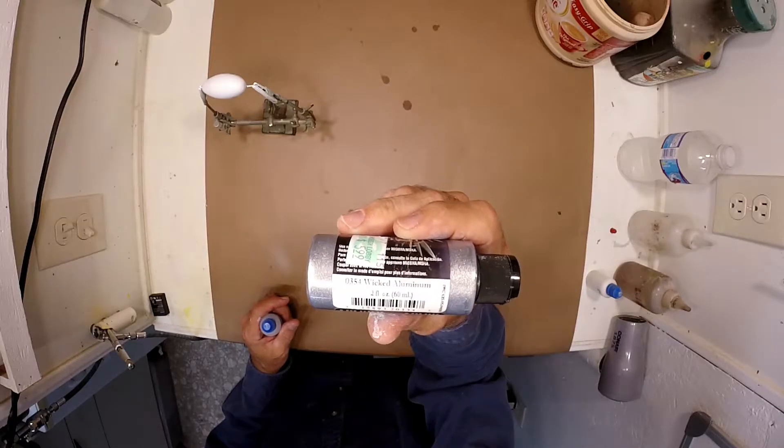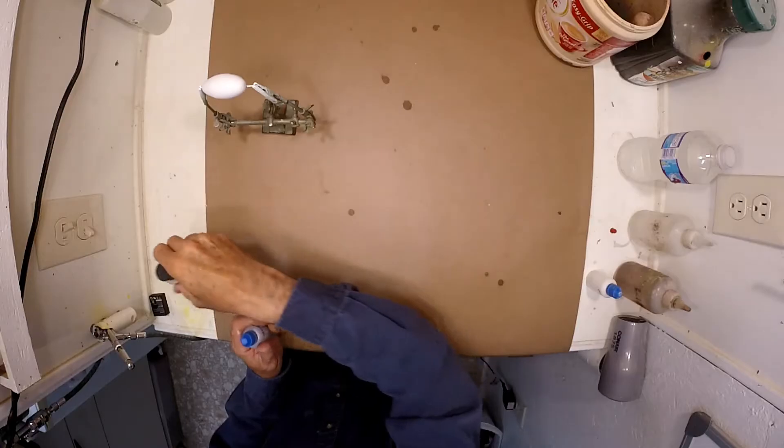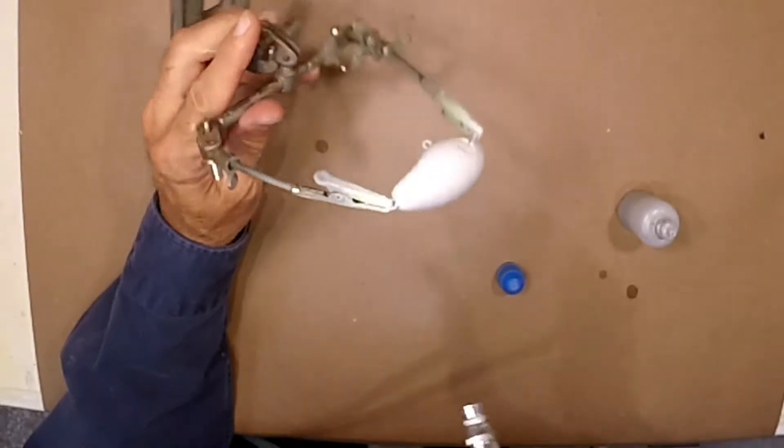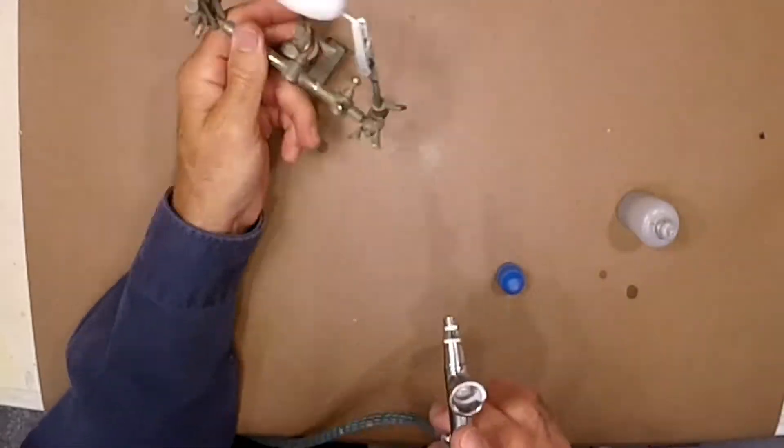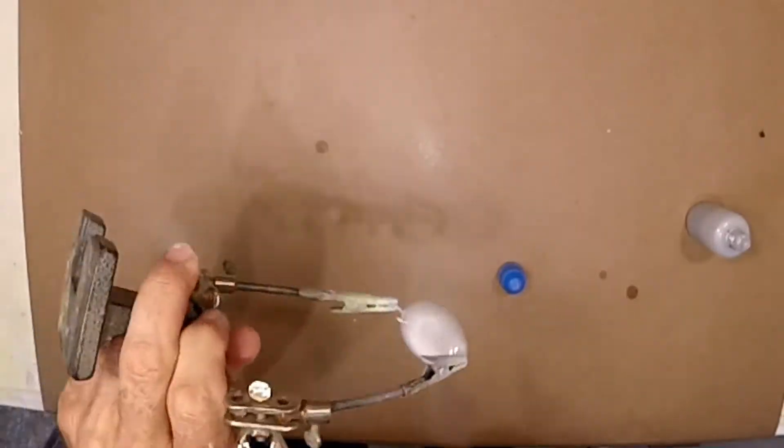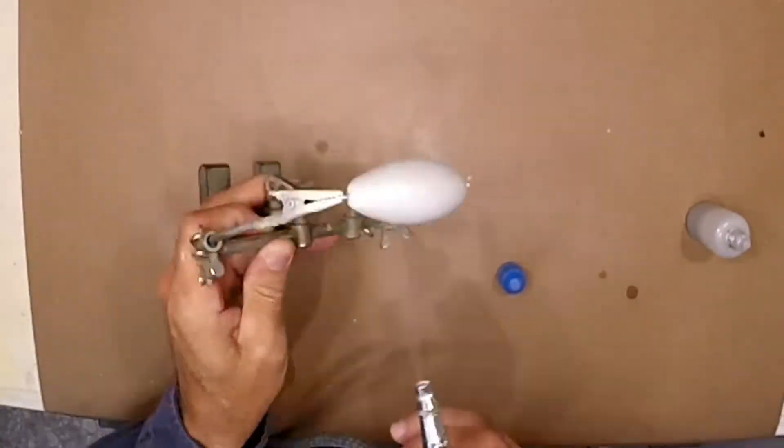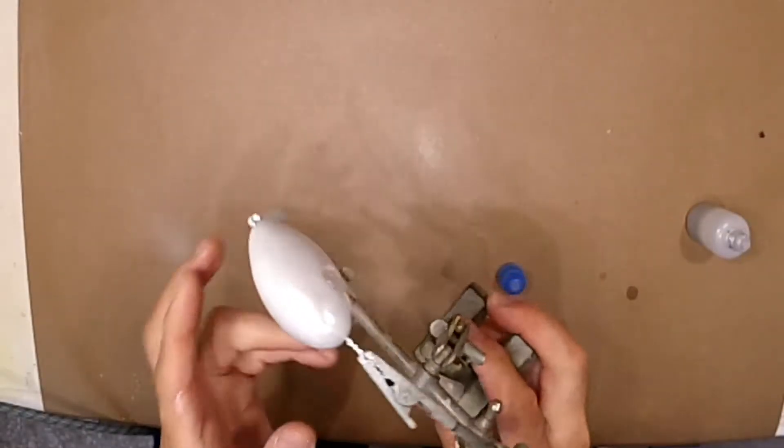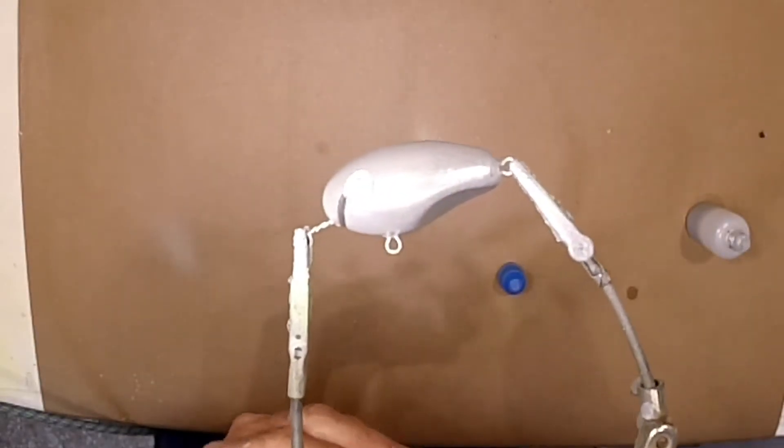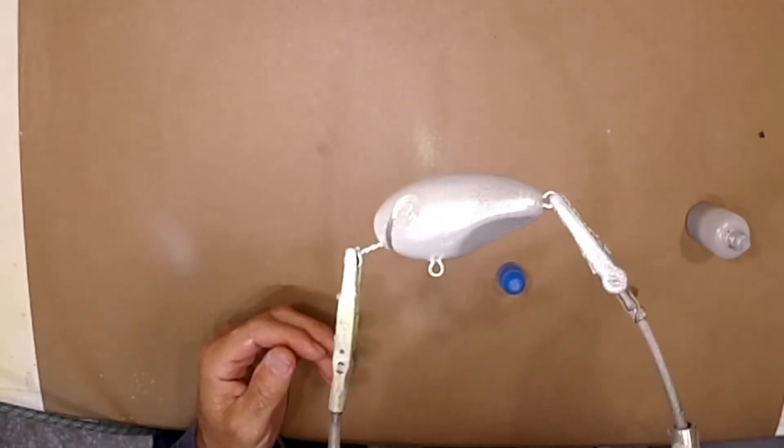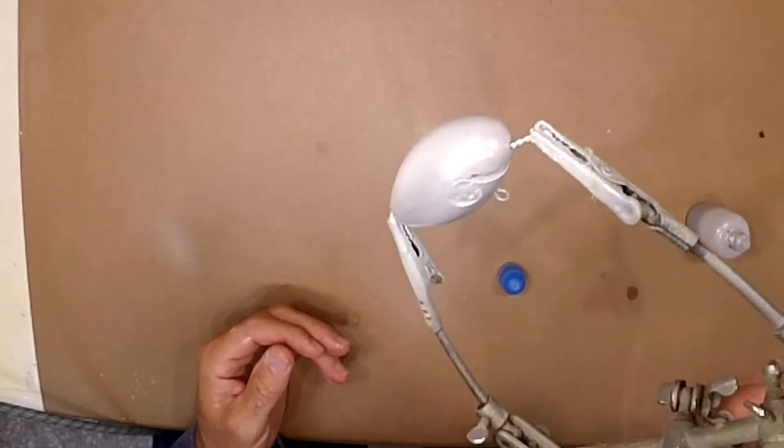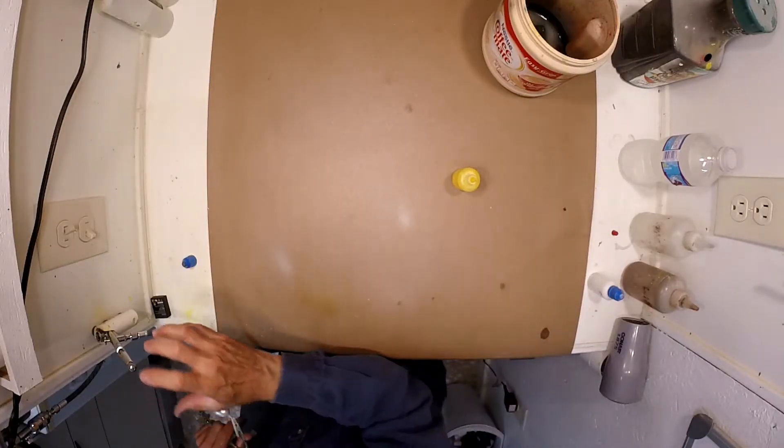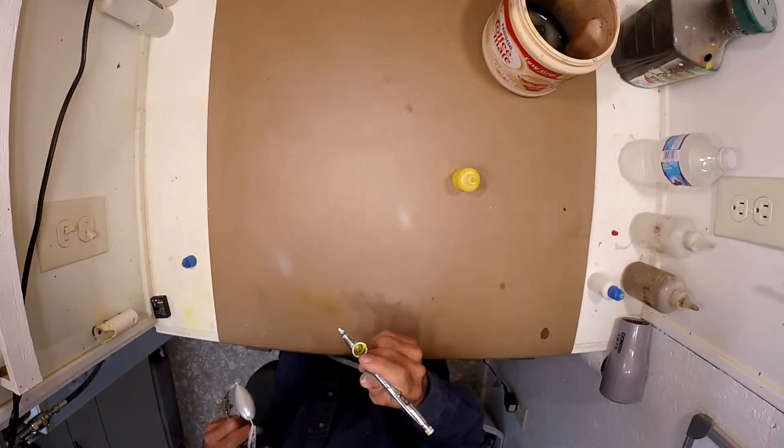Here's my first layer, wicked aluminum. And now I'm going to go with a little transparent yellow just because I want to give it a little bit of a gold effect.